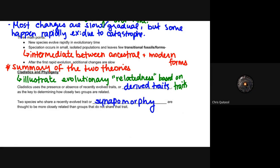Cladistics and phylogeny are the ways we can illustrate evolutionary relatedness based on those traits. Cladistics use the presence or absence of recently evolved traits, or what's called derived traits, as the key to determining how related those two groups are. Two species who share a recently evolved trait in terms of the structure and shape of their traits is said to be called synapomorphy, and they are thought to be more closely related to each other than groups that do not share that trait.